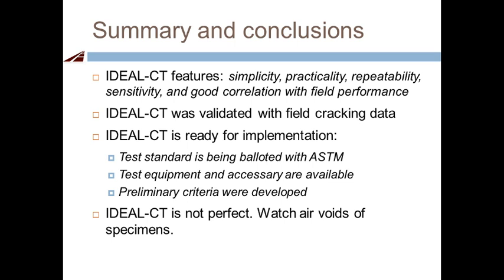What are the air voids supposed to be — 7% or 4%? All our test results use 7%. You can run whatever you feel comfortable with, but you must be consistent — 7% ± 0.5% or 4% ± 0.5%. Don't compare results at 4% versus 7%.